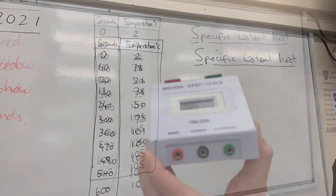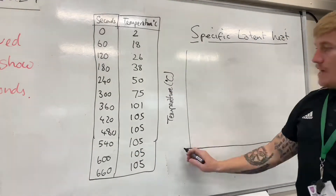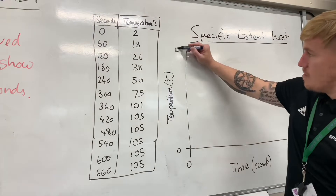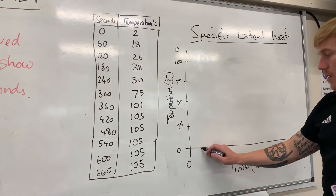Every 60 seconds I'm taking the temperature of what was ice, now water in liquid form. It's stopping at around 100°C and plateauing out, so I'm going to represent this data by drawing a graph and plotting some points.